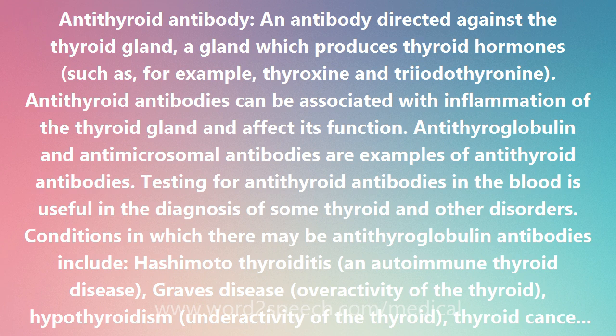Conditions in which there may be antithyroglobulin antibodies include: Hashimoto thyroiditis, an autoimmune thyroid disease; Graves disease, overactivity of the thyroid; hypothyroidism, underactivity of the thyroid; thyroid cancer; lupus; rheumatoid arthritis; autoimmune hemolytic anemia; and Chagrin syndrome.